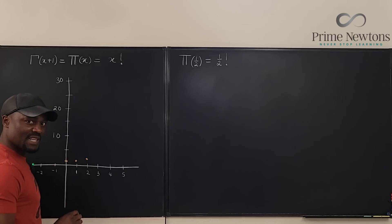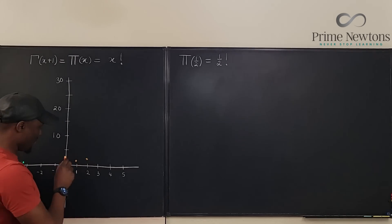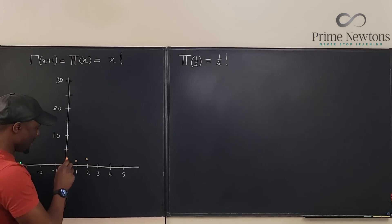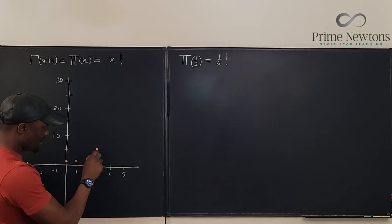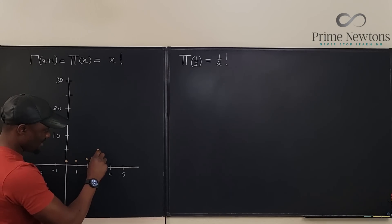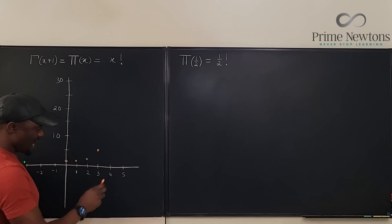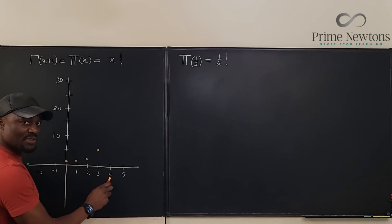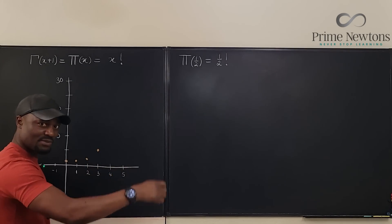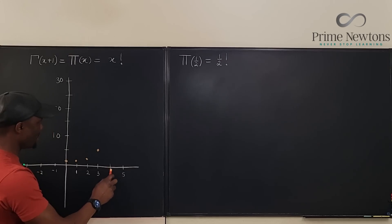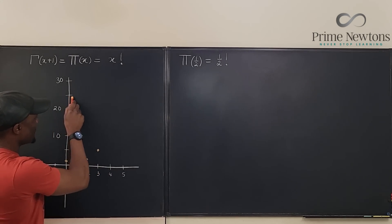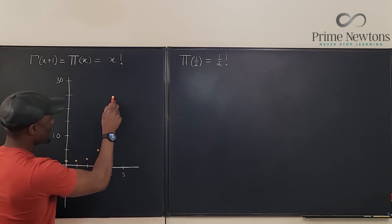Three factorial is six, so it has to be somewhere here — this is five, so six is just above. And four factorial is four times three times two times one, which is twenty-four, so it's got to be somewhere up here.